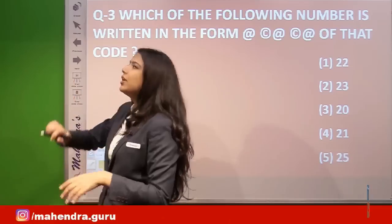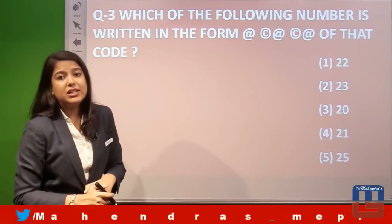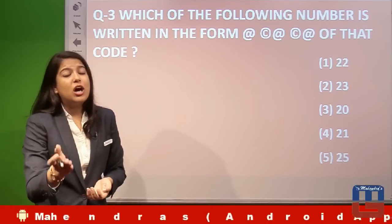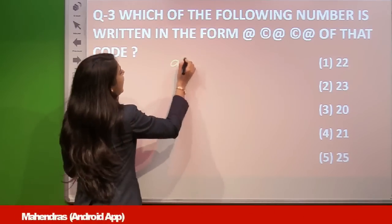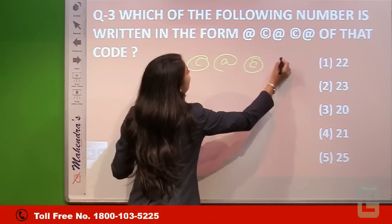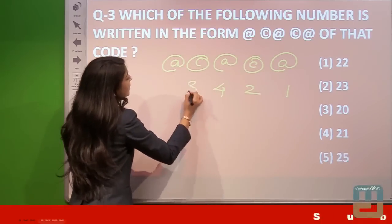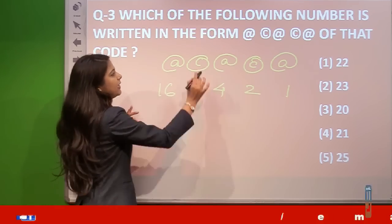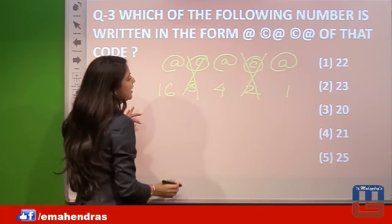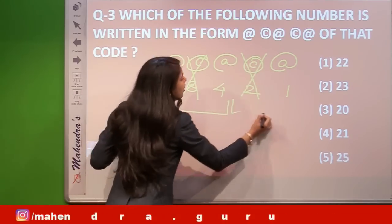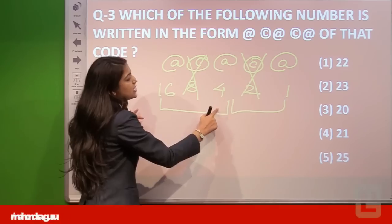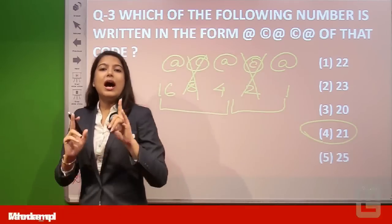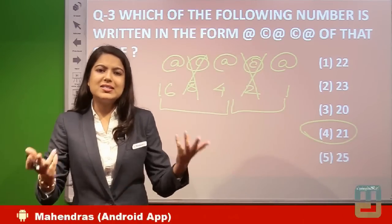Question 3: which number is represented by @©@©@? Starting from the right with series 1, 2, 4, 8, 16: the @ positions are 1, 4, and 16, while © positions (8 and 2) are not used. So 16 + 4 + 1 = 21. Option number 4, the answer is 21.